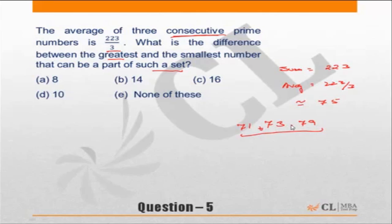What is the sum? 71 plus 73 plus 79 is 223, so the condition is satisfied. The difference between the two has to be 79 minus 71, which is 8. Correct answer choice (a).